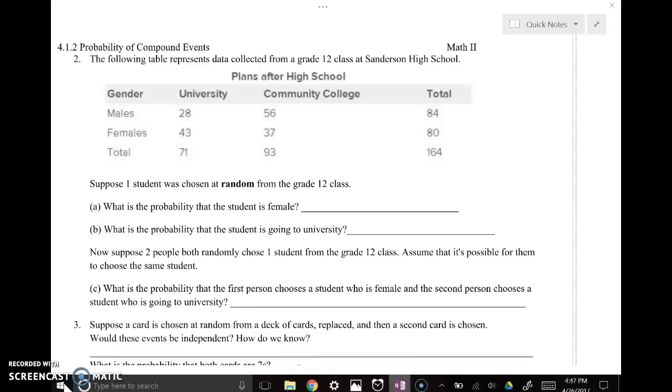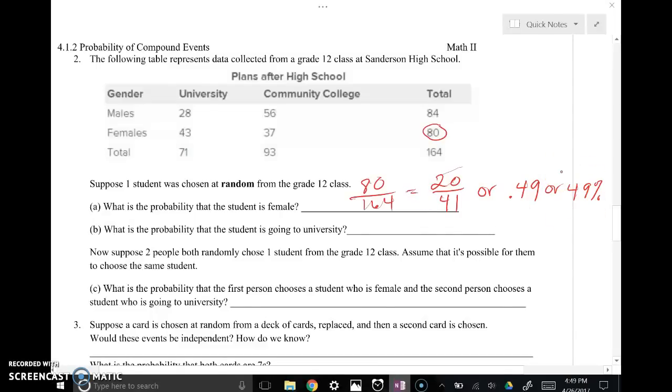Okay, so what is the probability that a student chosen at random from the twelfth grade class is female? So the way that we need to look at this is that we need to identify the total number of females that were interviewed was 80. So that's going to be our top number. That's the favorable outcome that's what we're looking for. And then the total number of people that were interviewed, 164. So 80 out of the 164, reduce that as much as you can or just turn that into a decimal.